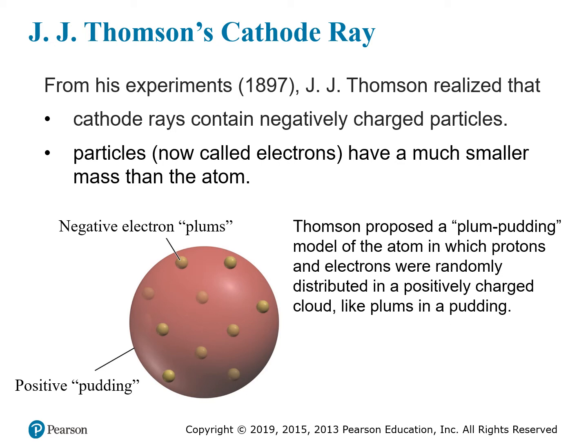Once it was realized that electrons were coming out of the atom, and since an atom is electrically neutral, there must be something left behind that has a positive charge. So the initial model based on these experiments was the plum pudding model. A plum pudding is an English dessert — a gelatinous pudding with plums uniformly distributed throughout. In the model, the positive part of the atom was like the pudding matrix, and the negatively charged electrons were thought to be stuck in there like plums, randomly distributed throughout.